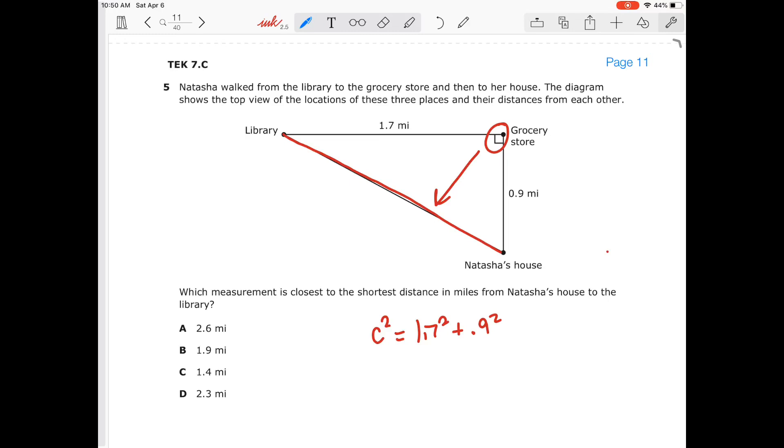That's going to give me C squared is equal to 3.7. So now I'm going to take the square root of both sides. That's going to give me C is equal to the square root of 3.7, which gives me 1.9 miles. So my answer choice is B.